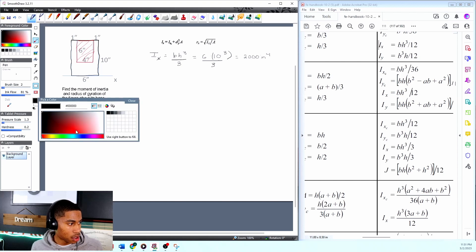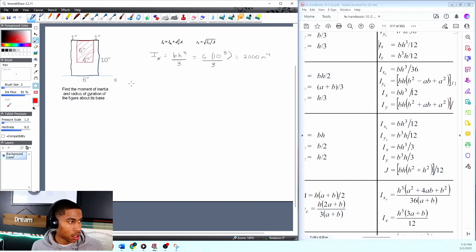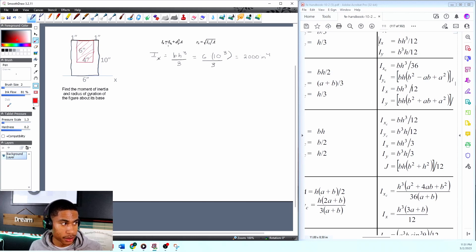Now for my red box. My red box, first of all, this is really important: my red box is not on my base or my x-axis, so I will need to use the parallel axis theorem that we talked about previously. ix equals ixc plus dy squared times a to get my inertia for this shape.